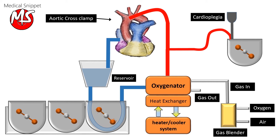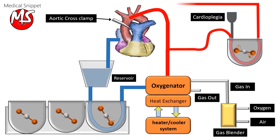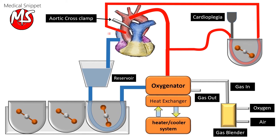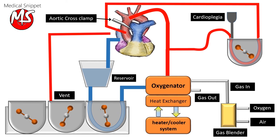After cross-clamping the aorta, the cardioplegia pump is run to deliver the cardioplegia to the aortic route through the cardioplegia delivery system, which contains a small heat exchanger, bubble trap, and temperature monitoring port. The blood from the vent cannula is returned to the venous reservoir.